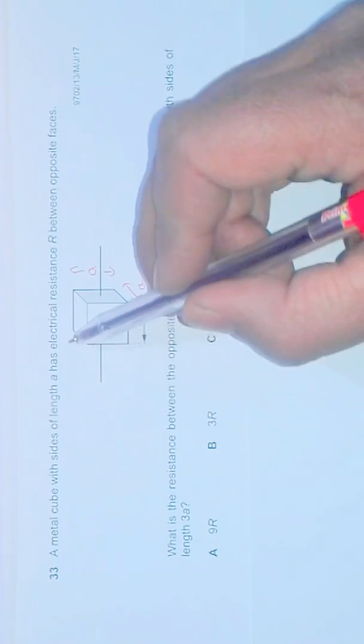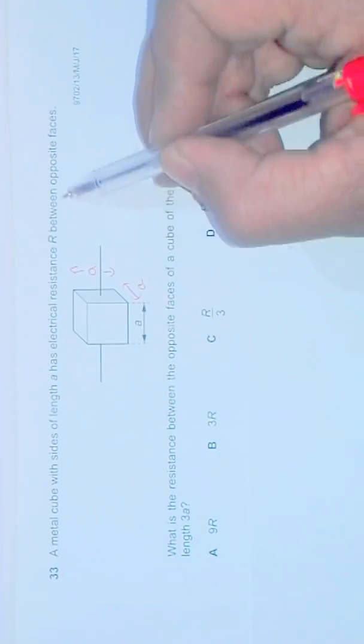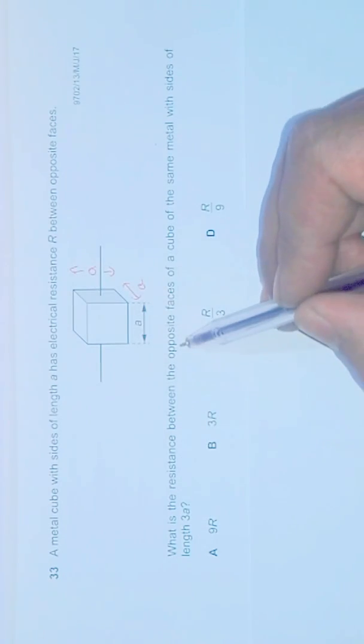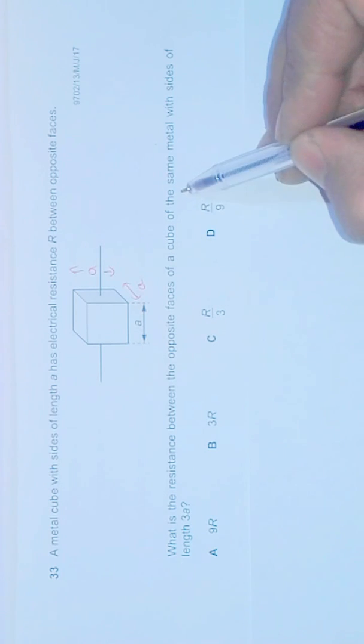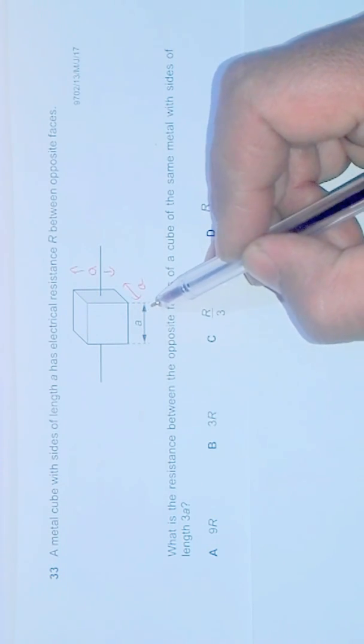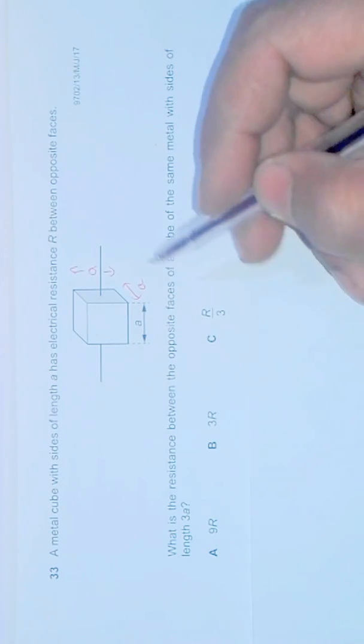Which sides of length A has electric resistance R between opposite faces? What is the resistance between the opposite faces of the cube of the same metal with sides of length 3A? So if the cube has got each side of length 3A, what will be the resistance?